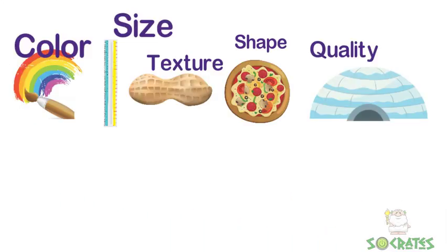Let's look at some examples. For color words, you can describe an object as being red, orange, yellow, green, blue, purple, or colorful.